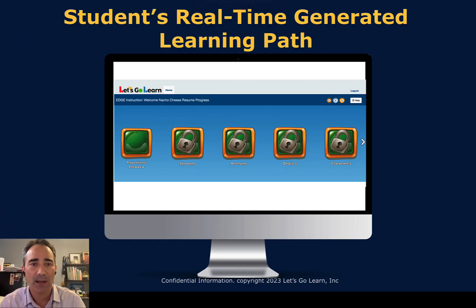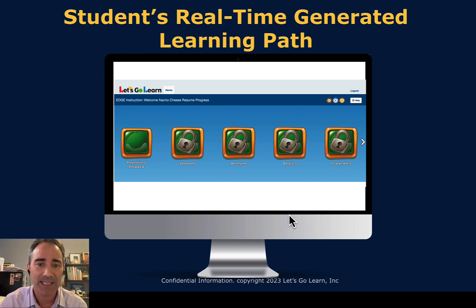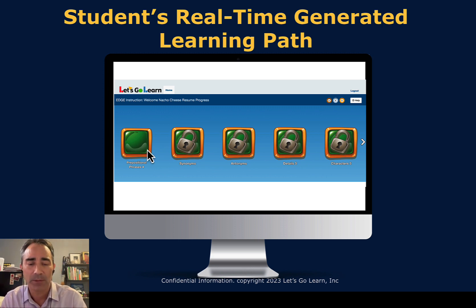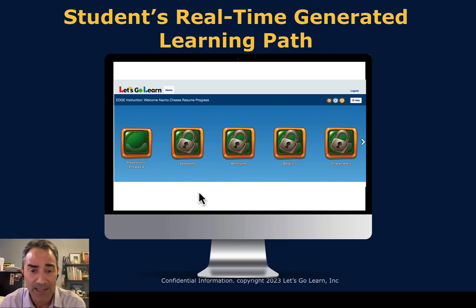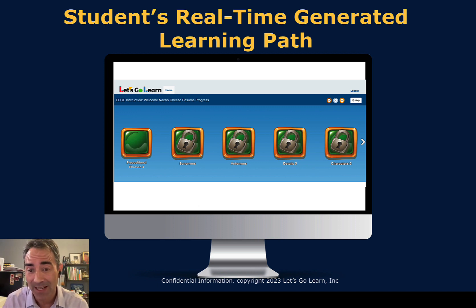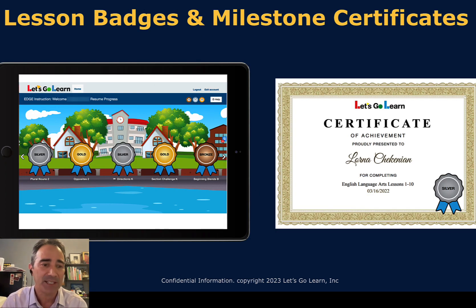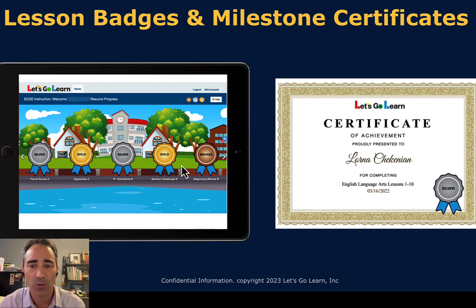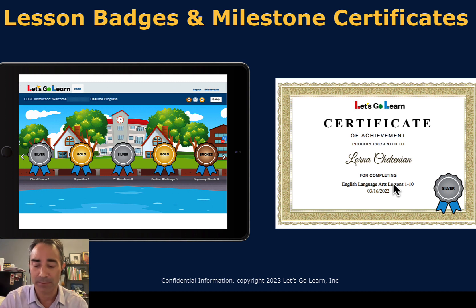Once a student logs in, they get a real-time path. This is what a student would see — the lesson they're working on, with lessons displayed as they progress. This changes in real time. If they take a quiz or are given an assignment and complete something early, it pulls it out of their automated path. As they earn badges, they can see them as they earn them and go back to get a higher score. They also get certificates of achievement that the teacher can share as students complete lessons and milestones.